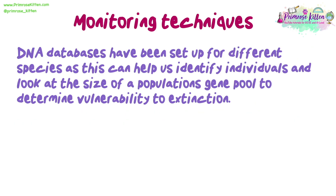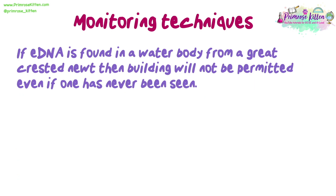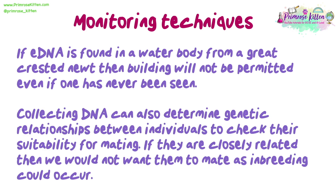DNA databases have been set up for different species, as this can help us identify individuals and look at the size of a population's gene pool to determine vulnerability to extinction. A large source of DNA comes from eDNA — environmental DNA — which is just DNA samples collected from the environment, for example a water or soil sample. For instance, if eDNA from a great-crested newt is found in a water body, then building will not be permitted, even if one has never been seen. Collecting DNA can also determine genetic relationships between individuals to check their suitability for mating — if they are closely related, inbreeding could occur.